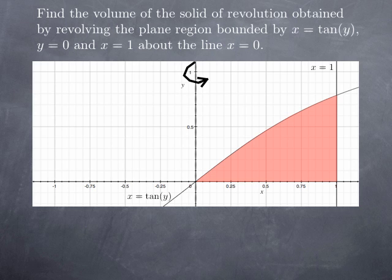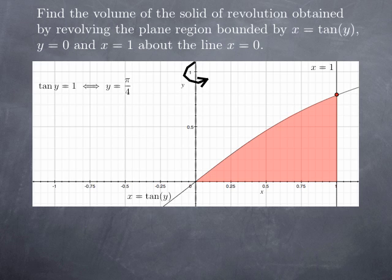Now we want to rotate it about the y-axis. If we rotate about the y-axis, we look at cross sections by planes perpendicular to the axis of rotation — in other words, planes y equals constant. We need to know what y-value corresponds to the point of intersection. Since we're on the curve x equals tangent y, and tangent y equals 1 when y equals pi over 4, the second coordinate of this intersection point is pi over 4.